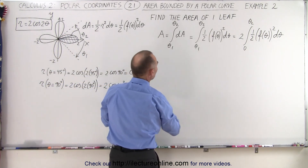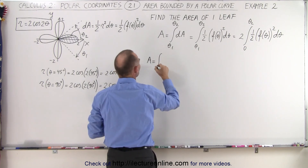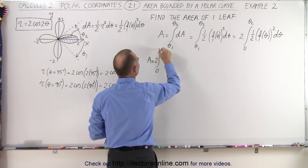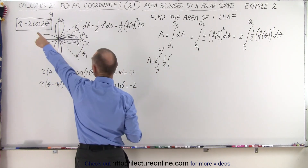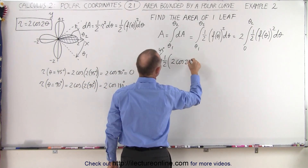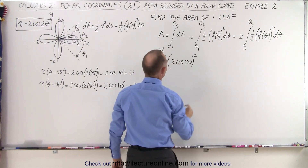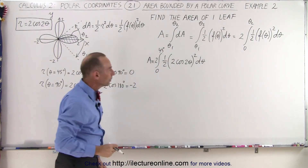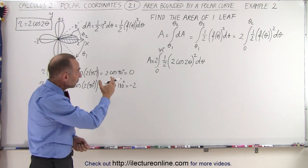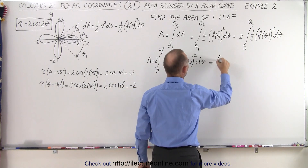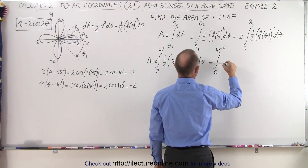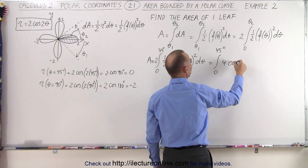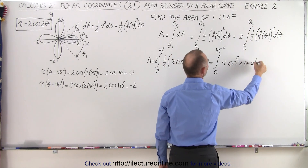So plugging in the equation, the area is equal to 2 times the integral from 0 to 45 degrees of one half times the function squared. The function is defined right here, so it would be 2 times the cosine of 2 theta, squared, times d theta. Now we bring the one half forward — 2 times one half is 1 — so this becomes equal to the integral from 0 to 45 degrees of that quantity squared, which is 4 times the cosine squared of 2 theta, times d theta.